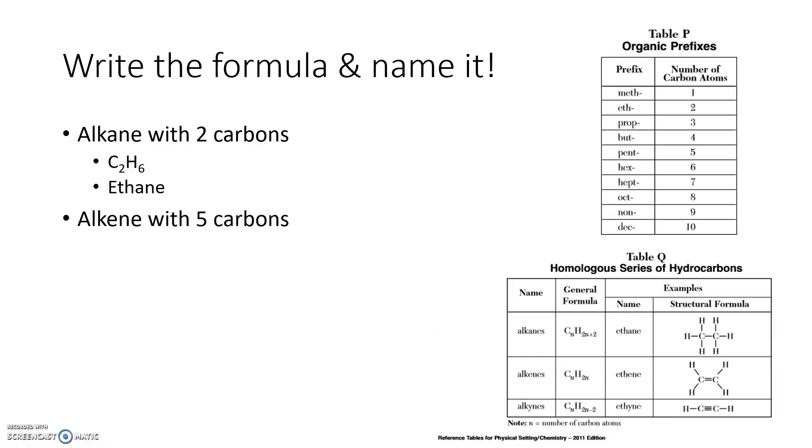Okay, try it with this guy. If I have an alkene with five carbons, come here for the prefix. Prefix for five is pent. I know that he's an alkene, so his name is pentene.